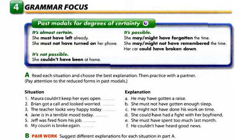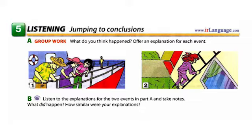Page 87, Exercise 5, Listening: Jumping to Conclusions, Part B. Listen to the explanations for the two events in Part A and take notes. What did happen? How similar were your explanations? I was on a cruise and saw something funny one morning. I was walking on the deck and I saw three people all bent over the railing. I thought maybe they were seasick or someone had an accident. So I went over to see if I could help. It turns out they were all bent over the railing because they were looking at some dolphins that were following the cruise ship. There were about eight of them and they followed us for a while. It was an amazing thing to see.